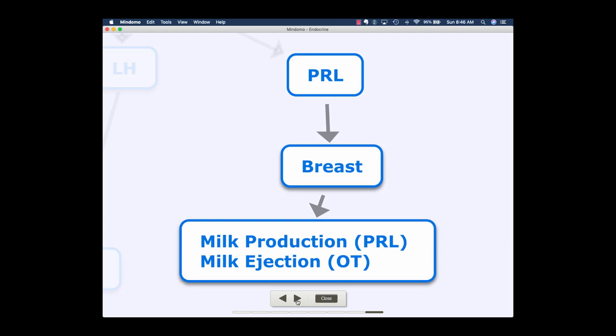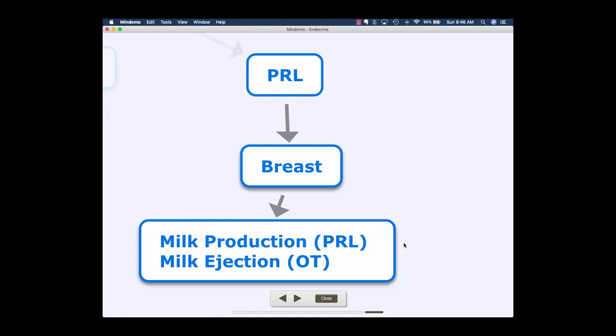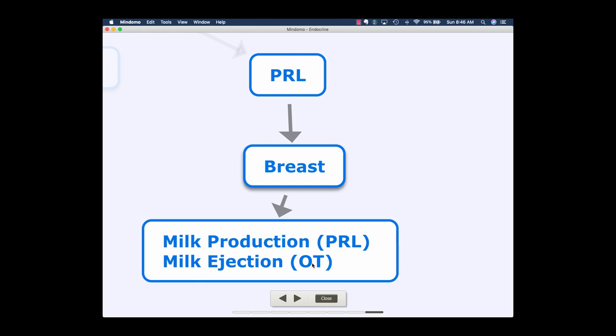Our last hormone from the anterior pituitary is prolactin. 'Lactin' — lactation refers to milk production. So it's not a surprise that prolactin acts at the breast. It's going to act on the mammary glands for milk production. The other side — milk ejection — that's oxytocin, which is coming from the posterior pituitary. Milk production is created by prolactin, but you need milk ejection, which is regulated by oxytocin from the posterior pituitary.